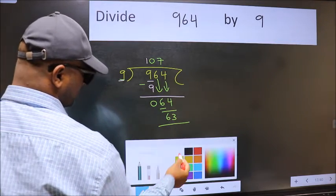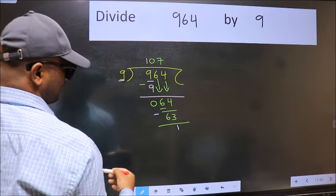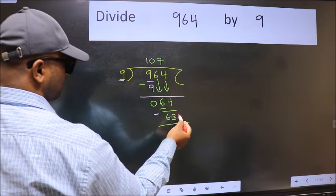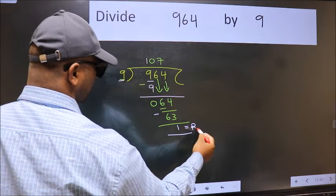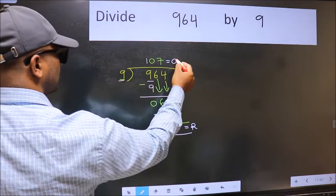Now we should subtract. We get 1. No more numbers to bring it down, so we stop here. This is our remainder and this is our quotient.